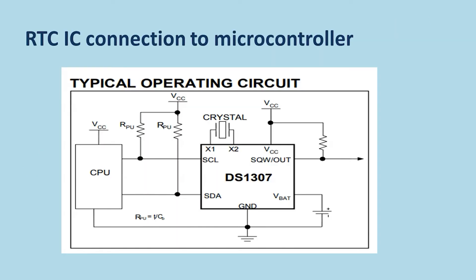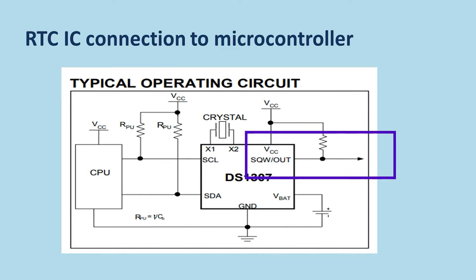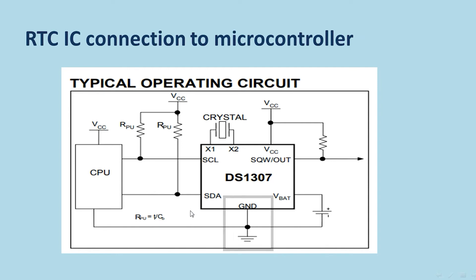This is the connection between the DS1307 and a microcontroller, taken from the datasheet. It is very easy. These two pins form the I2C bus, with pull-up resistors. There is also a square wave output option that the module can provide. You can connect the battery here, and the ground here — that is all you need.